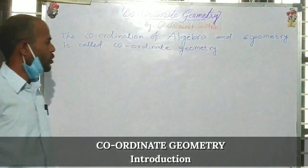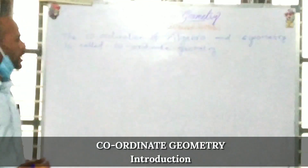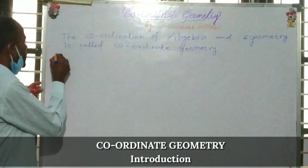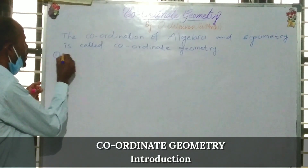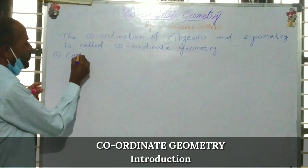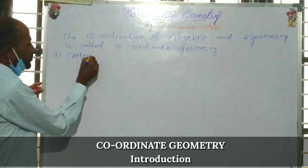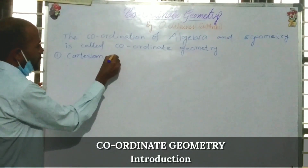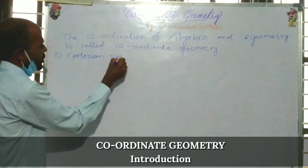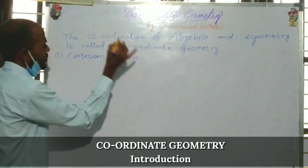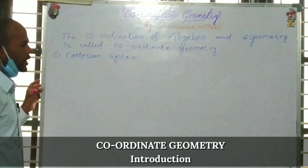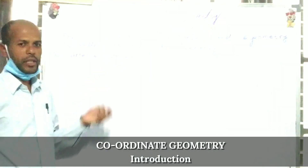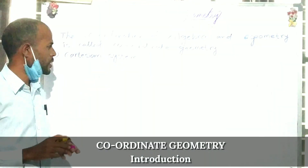In this, so many topics are there. The first one is the Cartesian System, also called the Coordinate System. What is the Cartesian System?